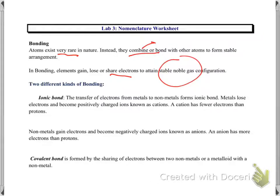An atom is stable if it has noble gas configuration, meaning 8 electrons in the outermost shell. Except for hydrogen — hydrogen is happy with 2 electrons in the outermost shell. All other elements want to have 8 electrons in the outermost shell. There are two different kinds of bonding that take place for an atom to be stable.